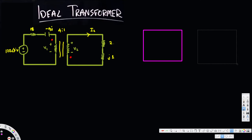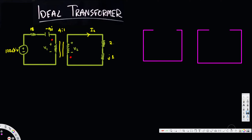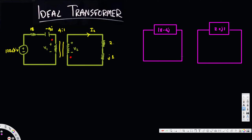This is our new circuit. In this circuit we are going to draw the impedances. The first impedance is 18 minus 4j, and the second impedance is going to be 2 plus j1. Now we are going to replace the voltage source and inductance.